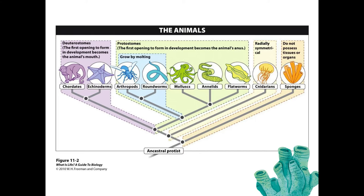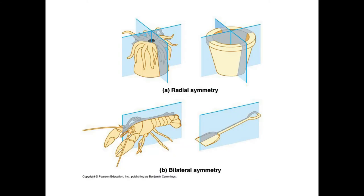Cnidarians are diploblastic — they only have tissues derived from two germ layers, the ectoderm and the endoderm. Additionally, they're radially symmetrical. Recall that radial symmetry describes animals that have no distinct anterior or posterior end, and for which it is possible to make multiple slices passing through the center, which all divide the organism into identical pieces.